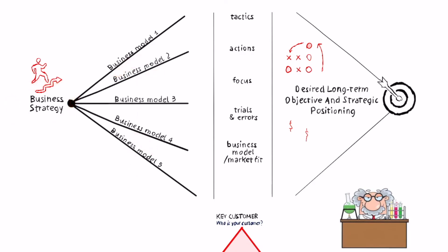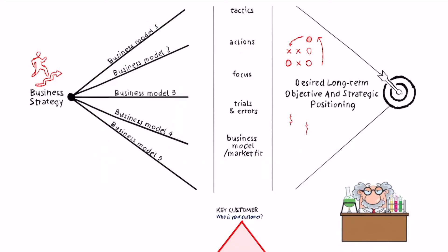Well, business strategy, we can define it as having a deliberate long-term objective and positioning. Business modeling is really a way for us to get there in the real world. Business modeling is going to give us the chance to test those assumptions as quickly as possible.